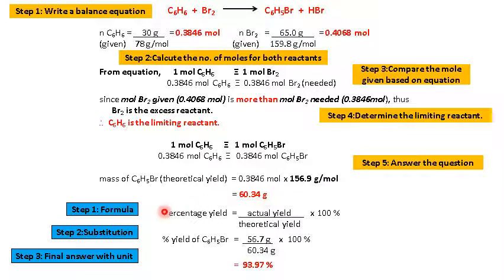So now we continue with the formula of percentage yield. And then substitute the value. Actual yield is 56.7 gram given by the question. And then 60.34 gram is the theoretical yield which we calculated times 100%. So we get 93.97% of percentage yield of bromobenzene.